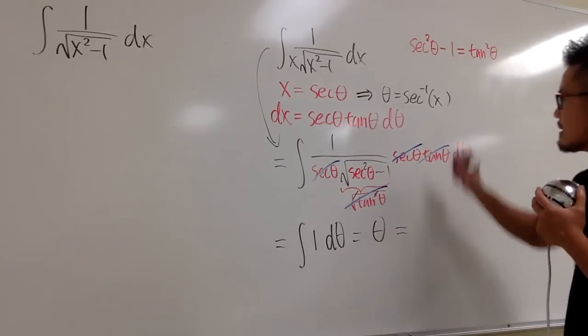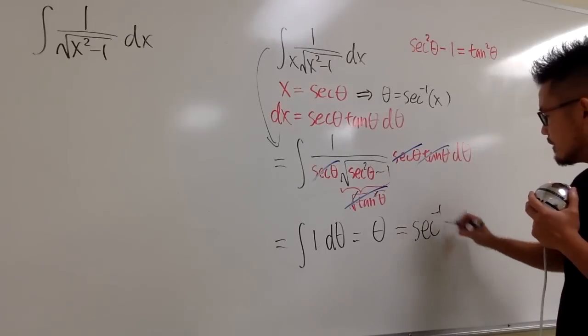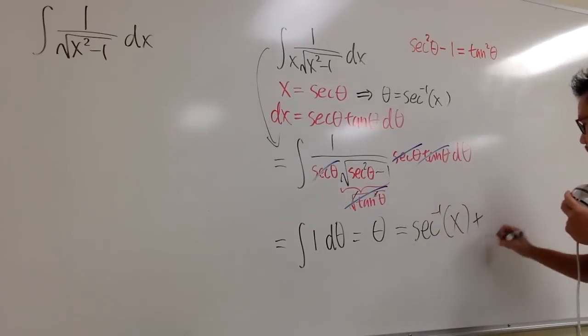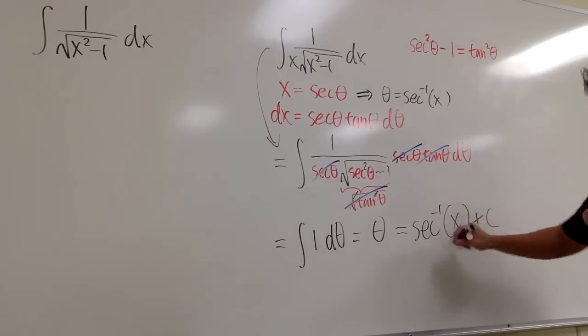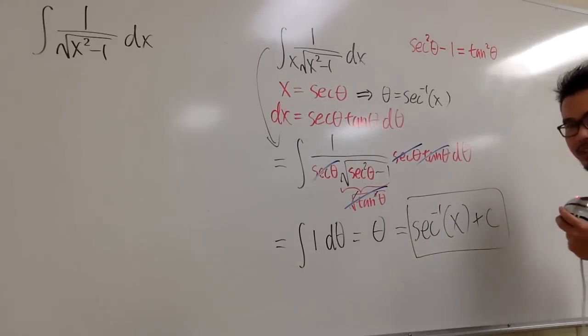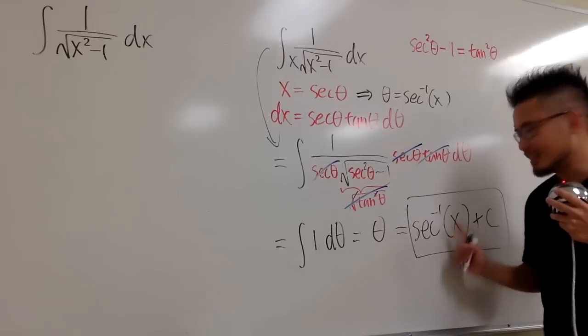So this is the same as that. Inverse secant x. And we put down the plus c at the end. And then, this is the answer. Yeah, that's it. You can write this down as arcsec x.